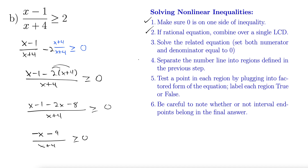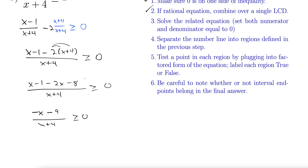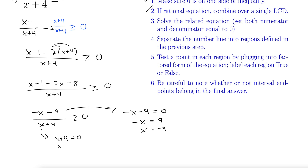Step three — solve the related equation by setting both the numerator and denominator equal to zero. That gets both our x-intercepts and our asymptotes — both places where the function can change from positive to negative. For the numerator: negative x minus nine equals zero, so negative x equals nine, meaning x equals negative nine. For the denominator: x plus four equals zero, so x equals negative four.